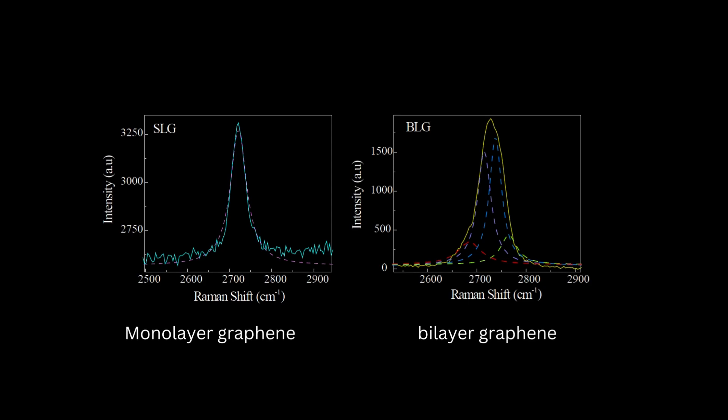The most striking feature in the Raman spectra of monolayer graphene is the 2D peak, which is a sharp peak. In bilayer graphene it is a broader peak with a shoulder. In monolayer graphene the 2D Raman peak fits with one Lorentzian; on the other hand, in bilayer graphene the Raman peak fits with four Lorentzians. This is how we can distinguish between monolayer and bilayer graphene. So now let's do the fitting.